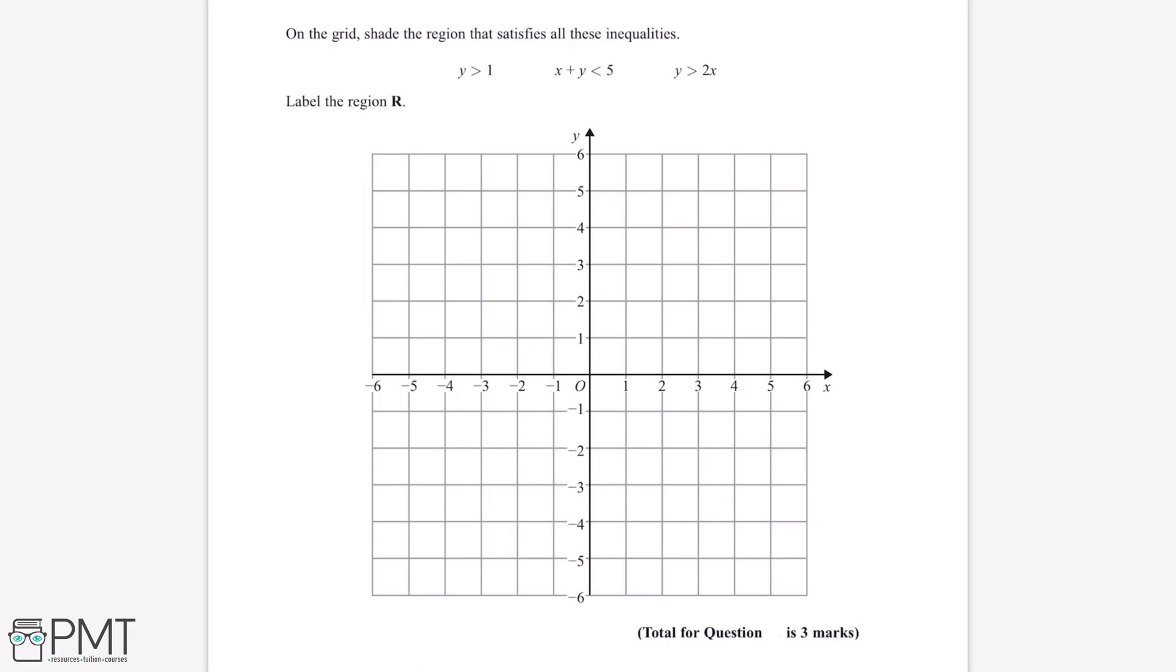On the grid, shade the region that satisfies all these inequalities. Label the region R.